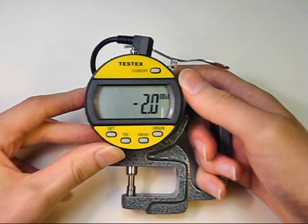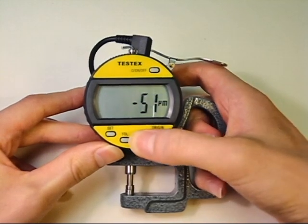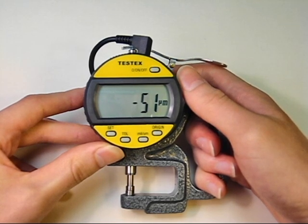The mil micrometer button allows the user to switch between inch units, here mils, and metric units, here micrometers. The set and toll buttons are not used.